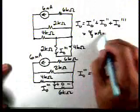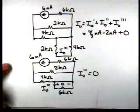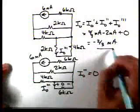I0 double prime was minus 2 milliamps, I0 triple prime was zero. So that gives us I0 equal to minus two-thirds of a milliamp.